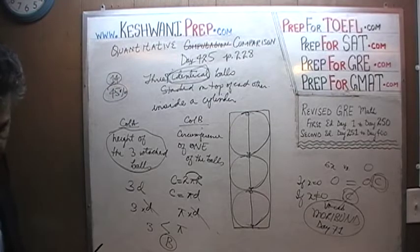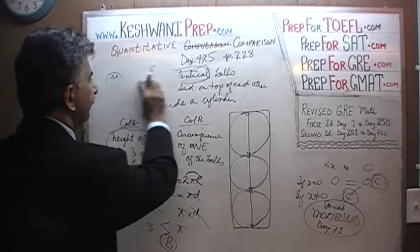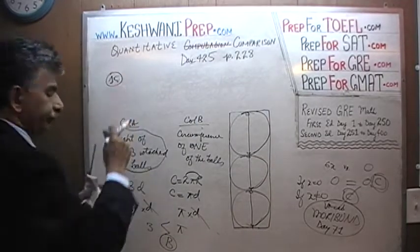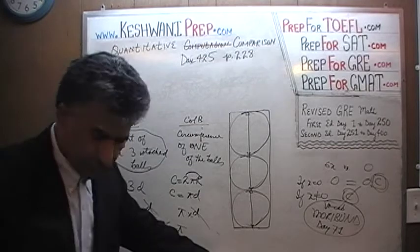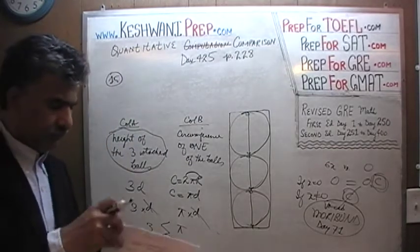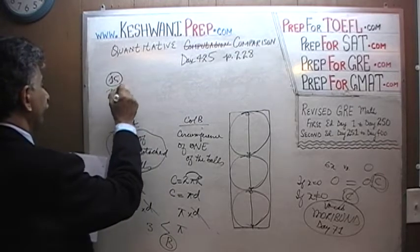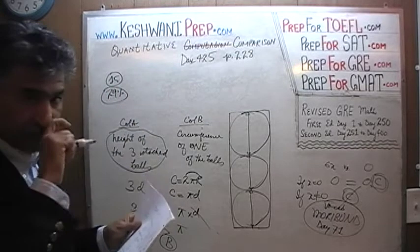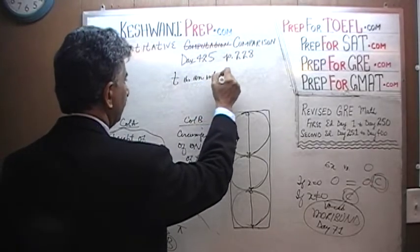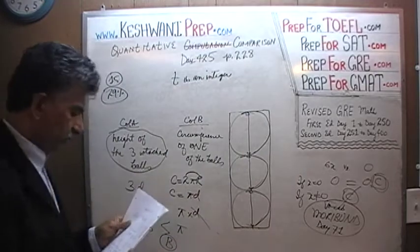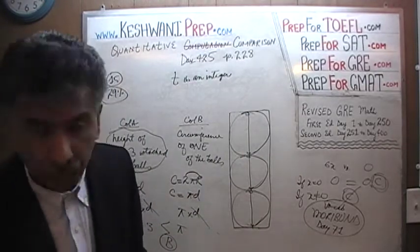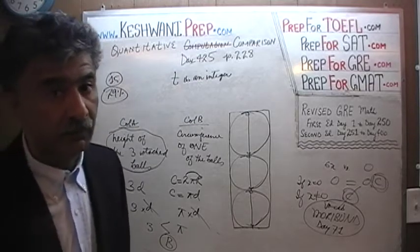Let's go to the next one — number 15, the last one. Twenty-nine percent got it right, so about seventy percent missed it. We are told first of all that t is an integer — t has to be a whole number. They don't tell us if it's positive or negative. T is an integer, which means it could be negative, positive, or zero.